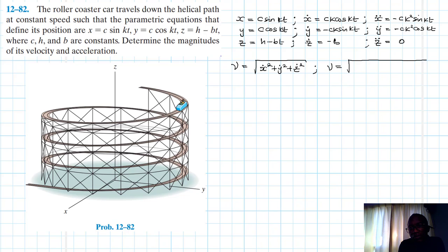And this therefore gives us, what do we have? Well we have ck cos kt squared plus -ck sin kt squared plus -b squared.